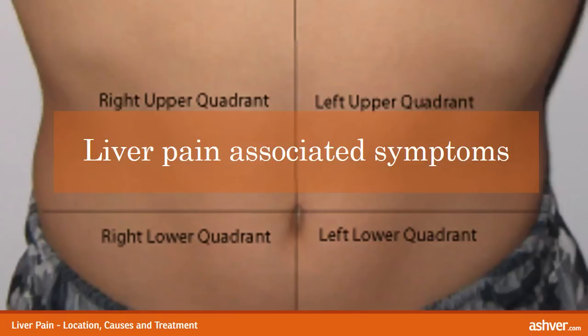Additional symptoms include: weight loss, abdominal bloating, nausea and vomiting, dark colored urine, swelling of testicles, high fever, and rapid heartbeat.